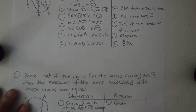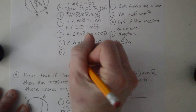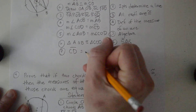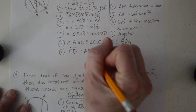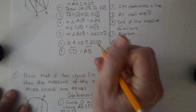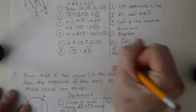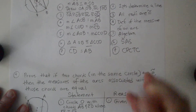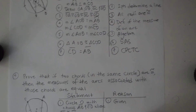Finally, we can say that segment CD is congruent to segment AB, and the reason is CPCTC.